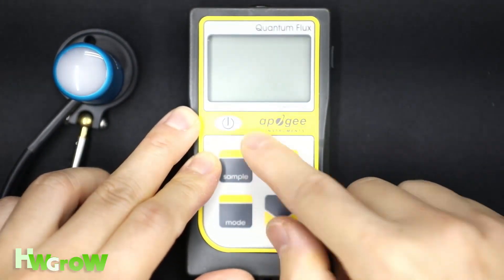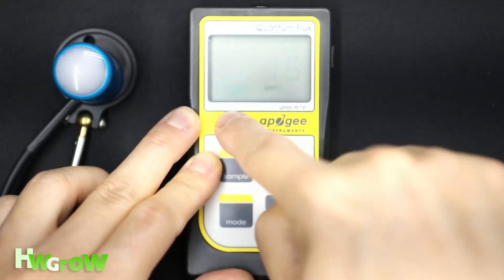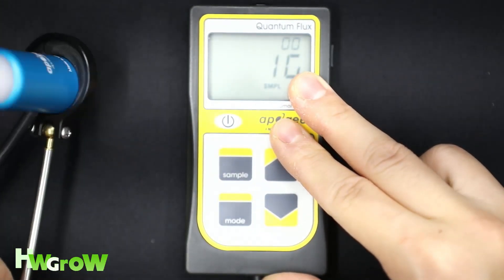There's five buttons: the on, sample mode, up and down. To turn the meter on, just press on, and you can see by default it's on sample mode.